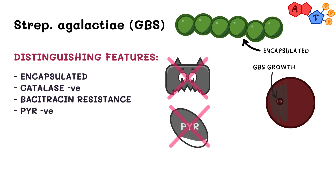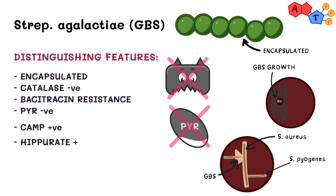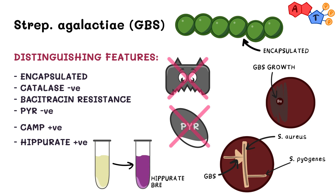Moreover, it's CAMP test positive. The CAMP test is considered positive when there is an increase in the area of hemolysis when GBS is cultured next to Staphylococcus aureus, as opposed to other bacteria like S. pyogenes for example. This test can be positive for other organisms such as Listeria monocytogenes. Lastly, group B strep is hippurate test positive, which means it can break down hippurate, turning it into a purple color. Again, this test can be positive for other organisms.